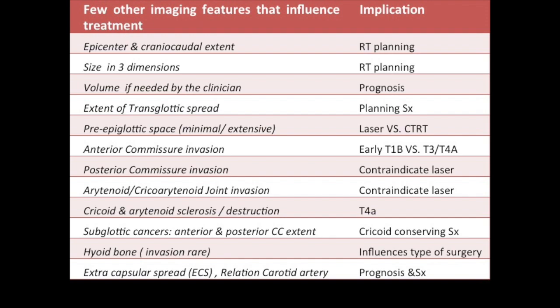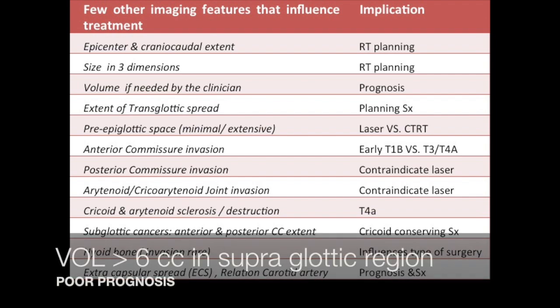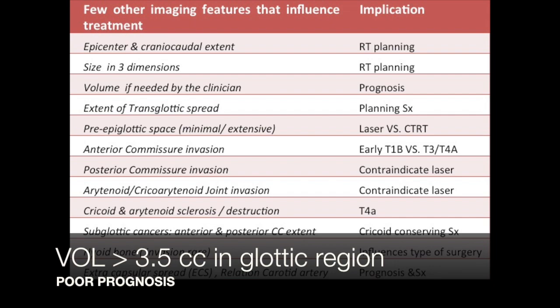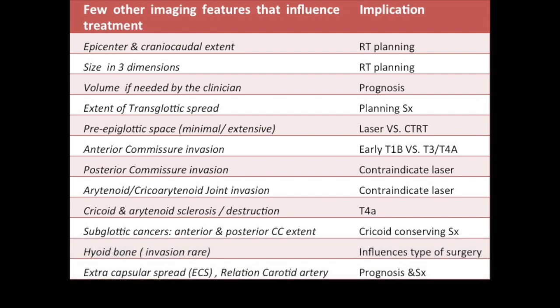A few other imaging features that influence management are the epicenter and the craniocaudal extent, which are important for radiotherapy planning. The sizes in three dimensions — AP, craniocaudal, and mediolateral — are also important for RT planning. Volume, if indicated by the clinician, has prognostic implications; volume more than 6 cc in the epiglottic region is a poor prognostic indicator.